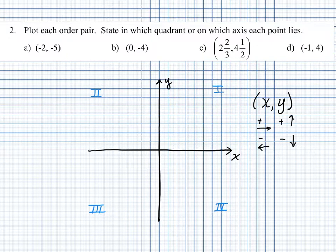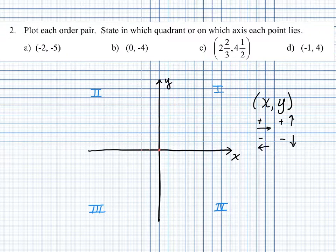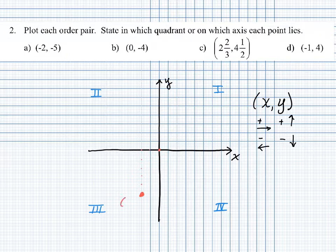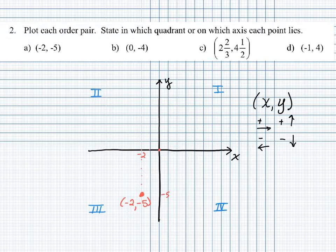In part A, we're looking at the point with coordinates negative two in the x direction. We begin at the origin and move two units to the left. Then the y value is negative five, so we move five units down. This point is located at negative two, negative five — negative two in the x direction and negative five in the y direction. We can see that this point lies in quadrant three.